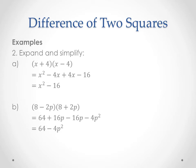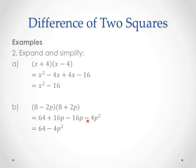So I hope you're starting to pick up on what might be special about this rule. These two brackets are almost identical — the first term is both x, the last term in both brackets is 4, and the only difference is that one bracket has a plus and one has a minus. That's why the two middle terms are plus and minus versions of each other and cancel each other out.